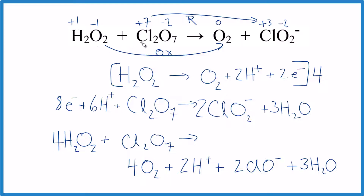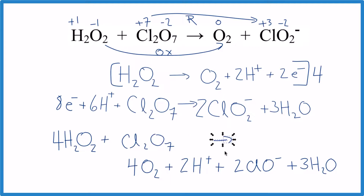This is the balanced redox reaction for H₂O₂ plus Cl₂O₇ in acidic medium. If you count all the atoms on both sides they match, and the charge is the same — neutral here, and two plus and two minus on the product side also adds up to zero.